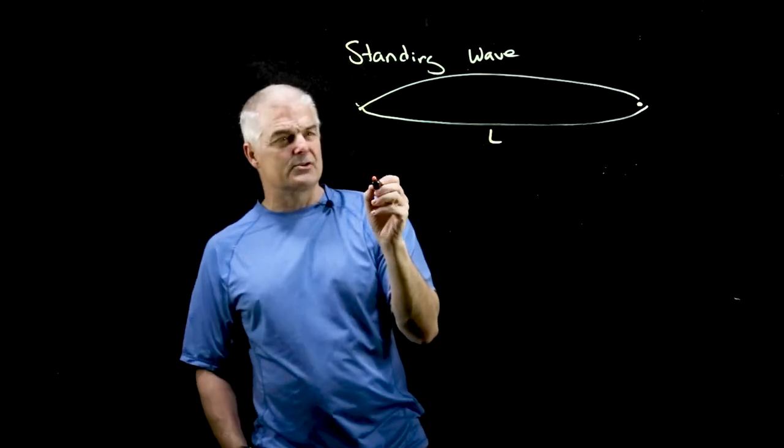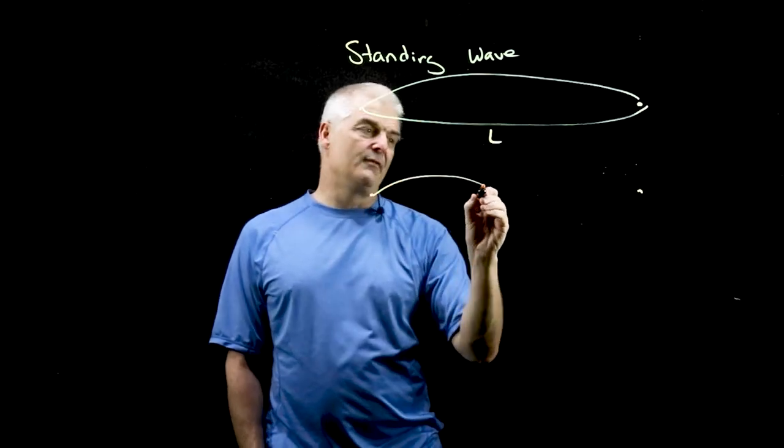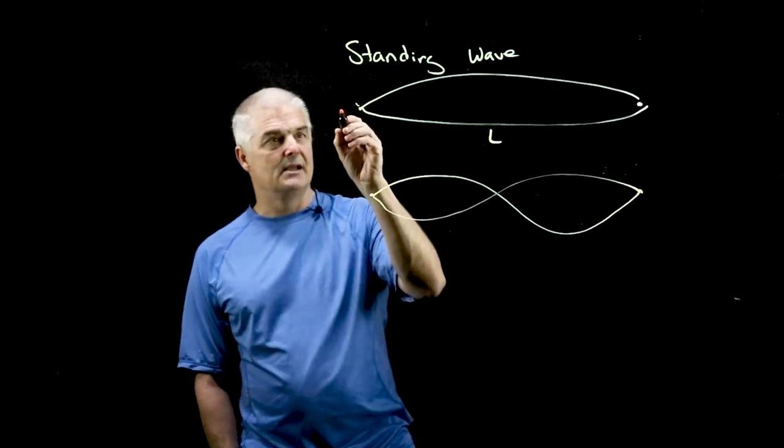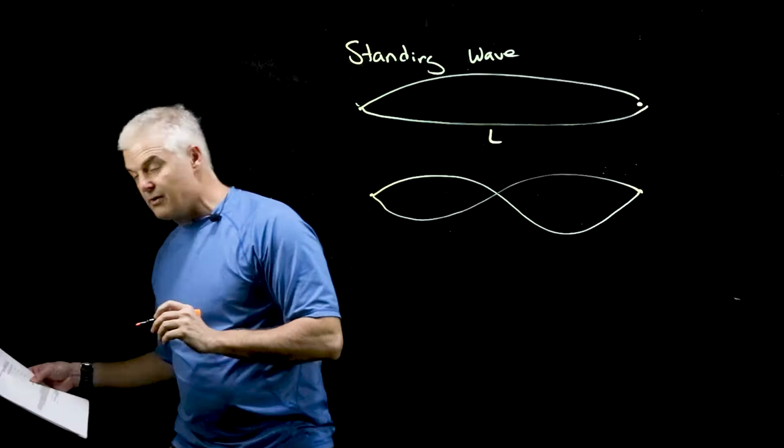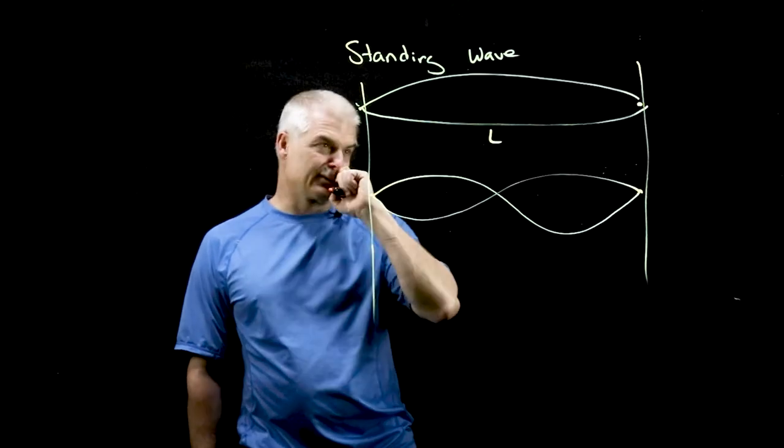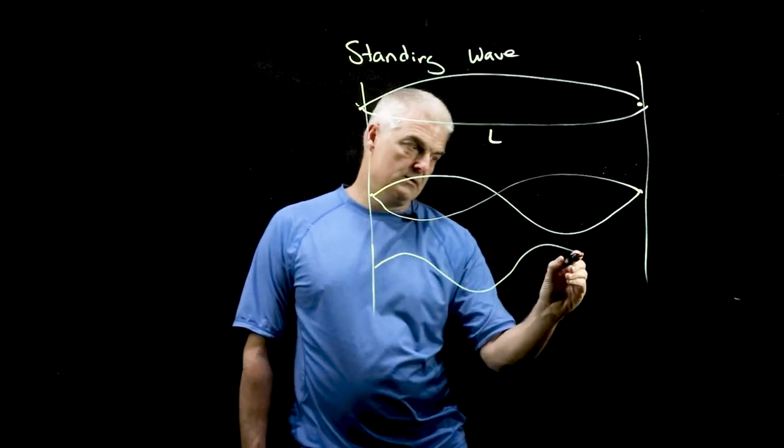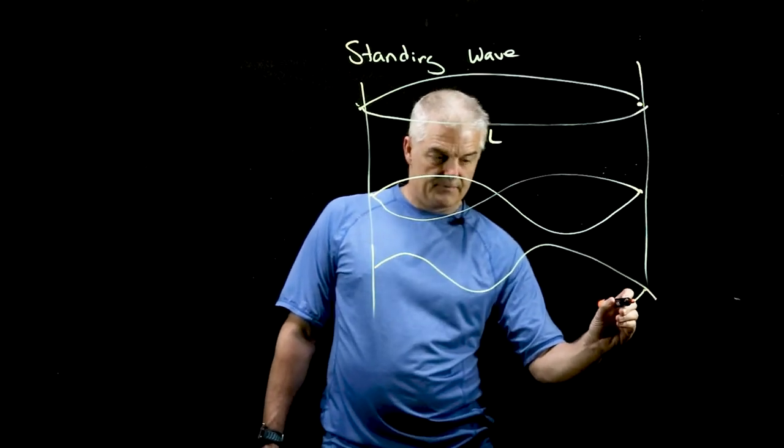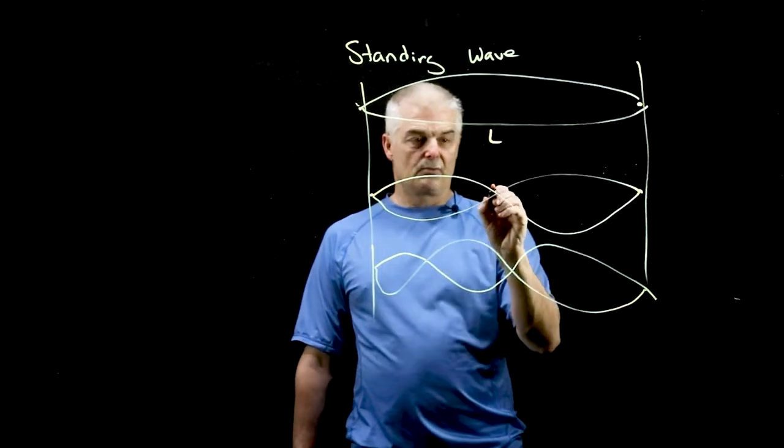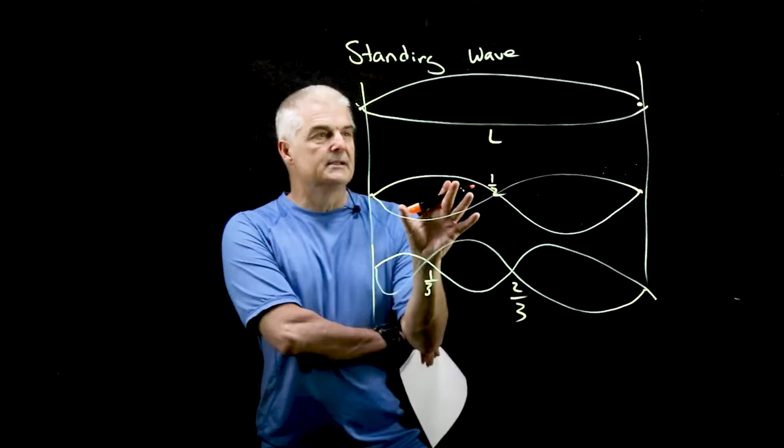Now interestingly enough, when you also pluck that string, something interesting is happening: one half of the length is also oscillating. All these things are happening simultaneously, and then also you would have it in thirds. So this is the edge of the guitar string. We're looking at the string in three different patterns. This would be one half, this would be a third and two thirds.